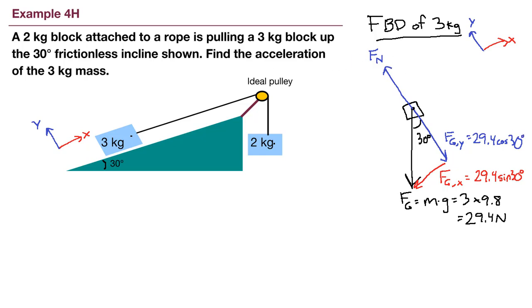We also have here a rope. A rope is attached to this block, pulling it up the ramp, which means that this is a tension force that points up the ramp. We're told that the incline has no friction. So we do not have a friction force that would be pointing against the motion.